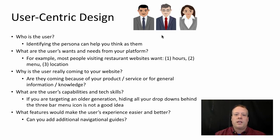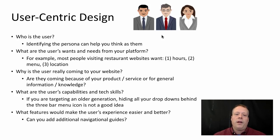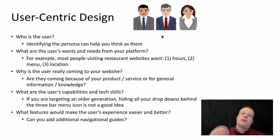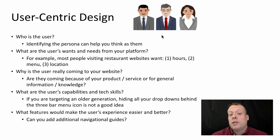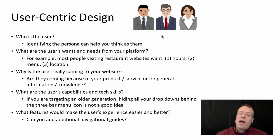For example, most people visiting restaurant websites want hours, menu, and location — that should be very salient and obvious on the website. You also need to think about why the user is really coming to the website. Are they coming because of your product or service, do they need general knowledge, did they see a brand mention and want to explore it, or do they have a very specific question they're trying to answer? Once you know that, you can think about how to design the website to best suit their needs.